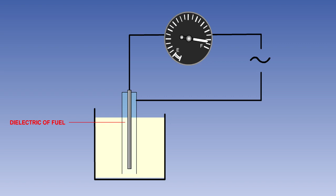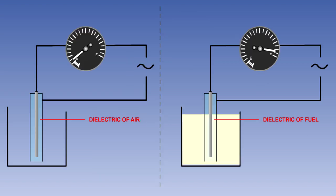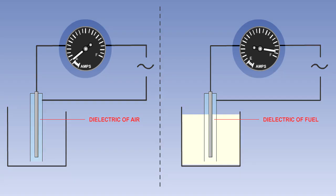A dielectric consisting of fuel will allow more current to flow in the circuit than a dielectric of air will. The level of current flow will therefore be proportional to the volume of the fuel in the tank. By measuring this current, we can know the volume of the fuel in the tank.